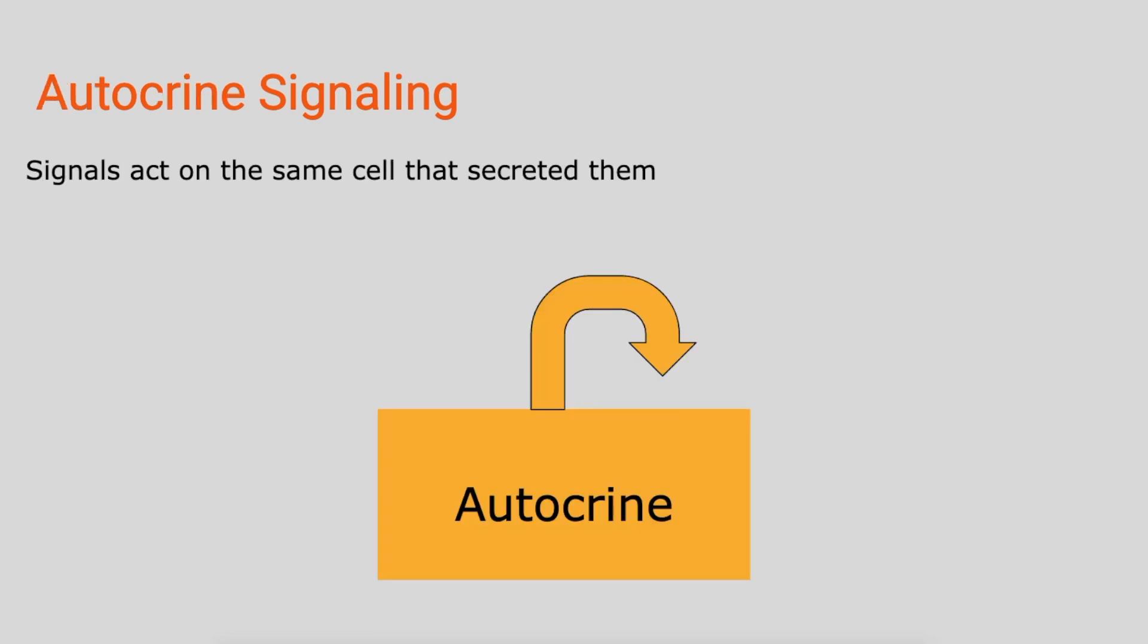So in autocrine signaling, the signals act on the same cell that secretes them. As you can see here, the cell is secreting the signal, and then it's coming back on to act to the same cell that secreted it.